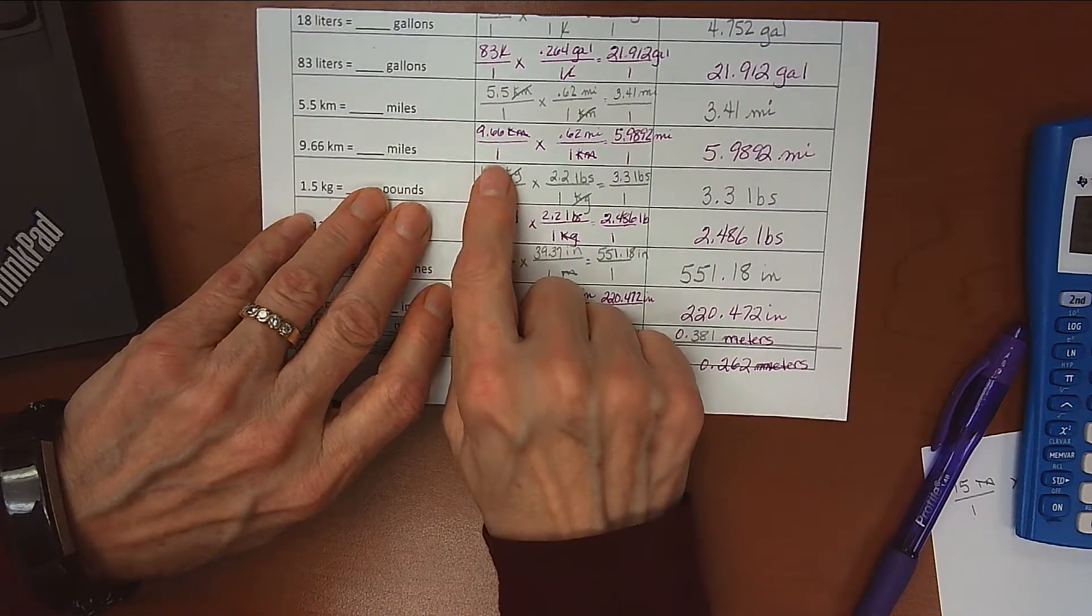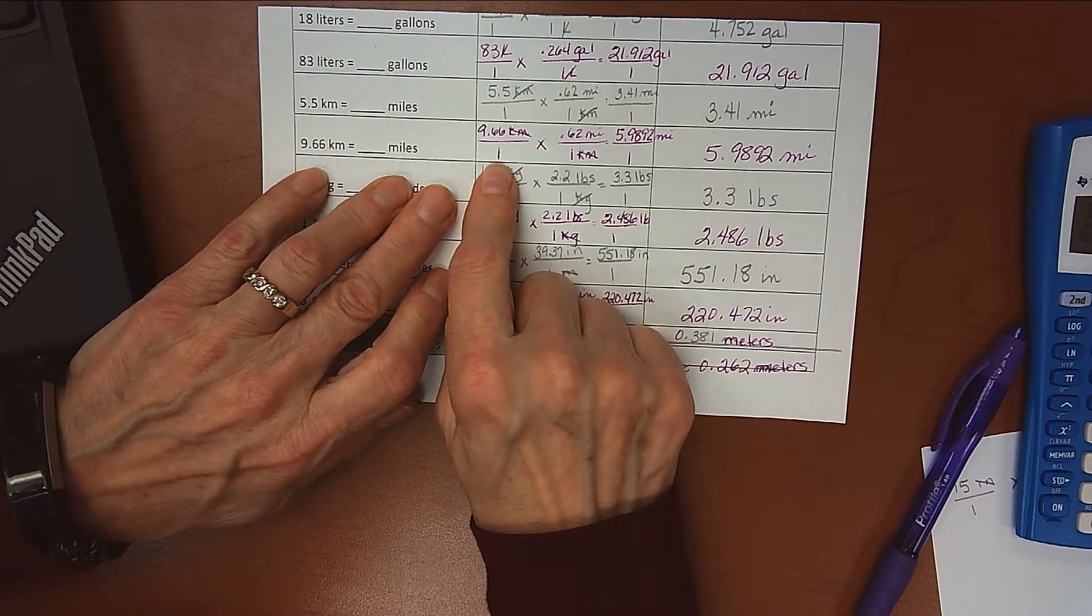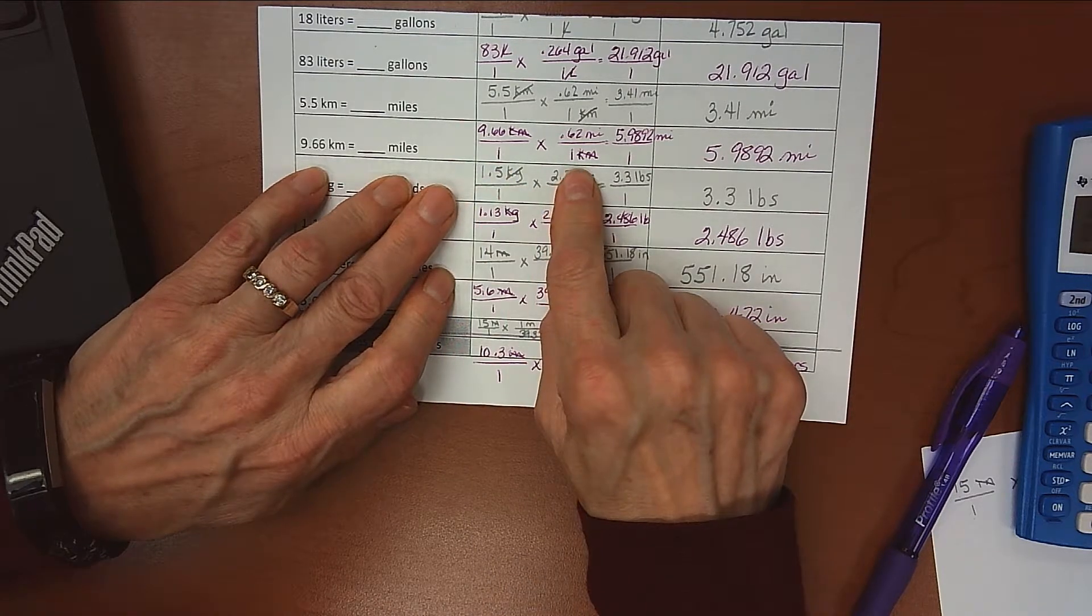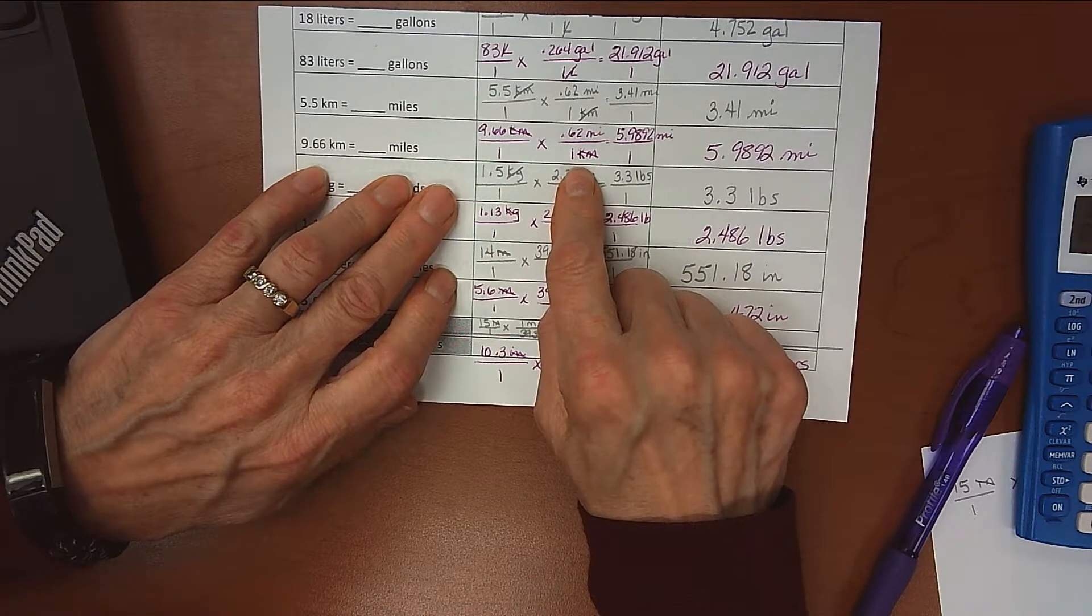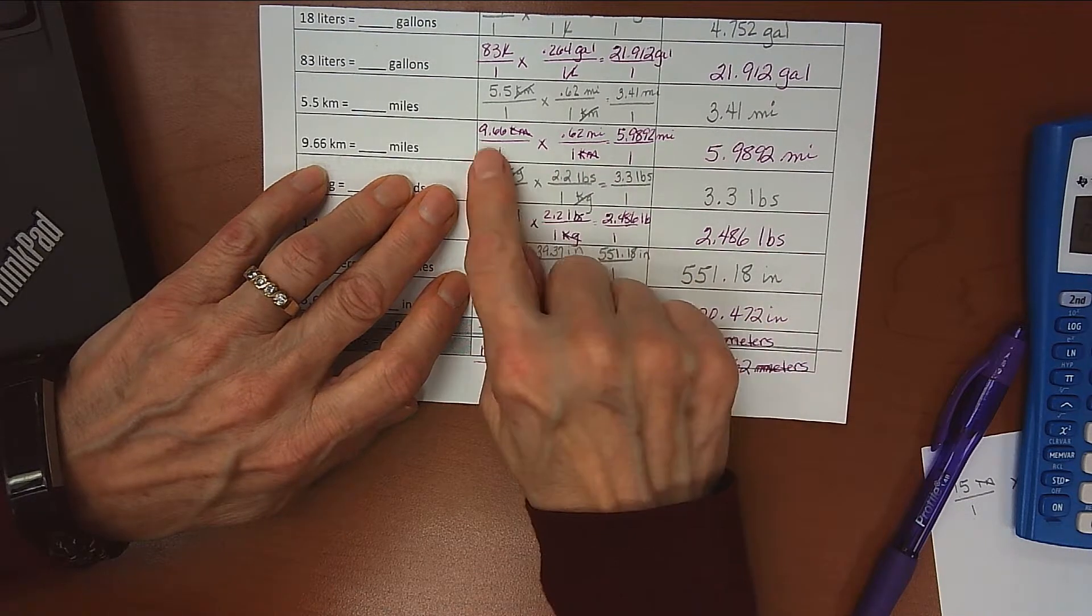Next one, 9.66 kilometers, my conversion factor was 0.62 miles over 1 kilometer. When I multiplied that out I got 5.9892 miles.